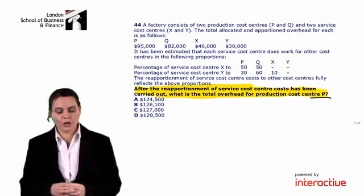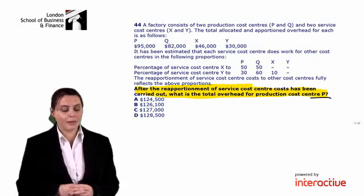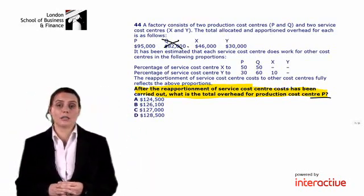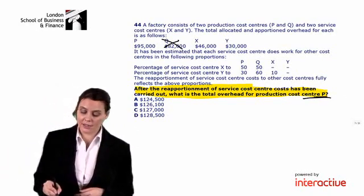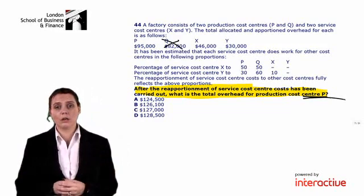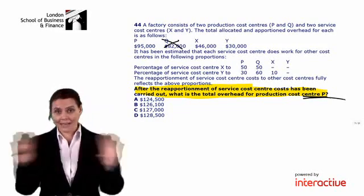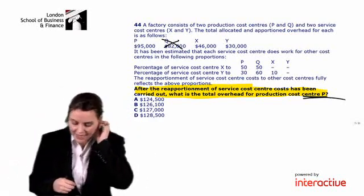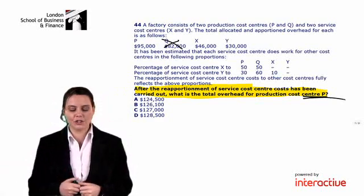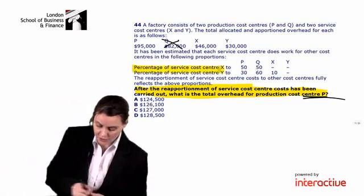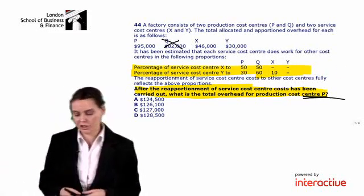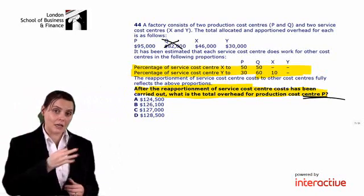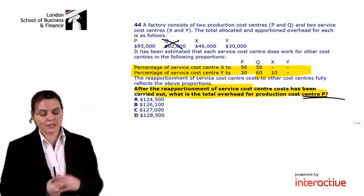We're told a factory consists of two production cost centres P and Q, and two service cost centres X and Y. The total allocated and apportioned overhead for each is given. We're not interested in production cost centre Q, because the question only asks for the total costs for P after reapportionment — so we won't waste time on calculations for Q. We're also given the percentage of time each service cost centre spends in each of the other cost centres, which is the information we need to do our reapportionment.